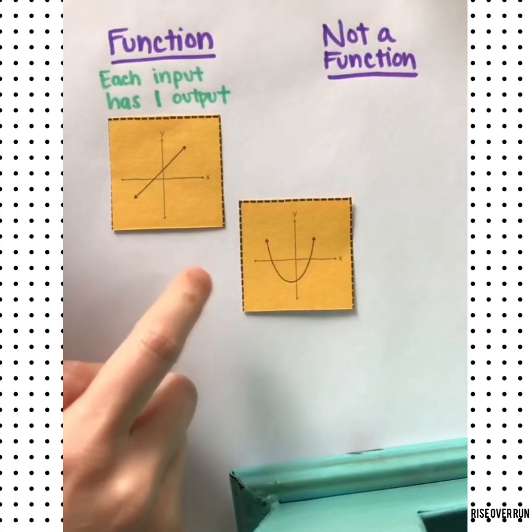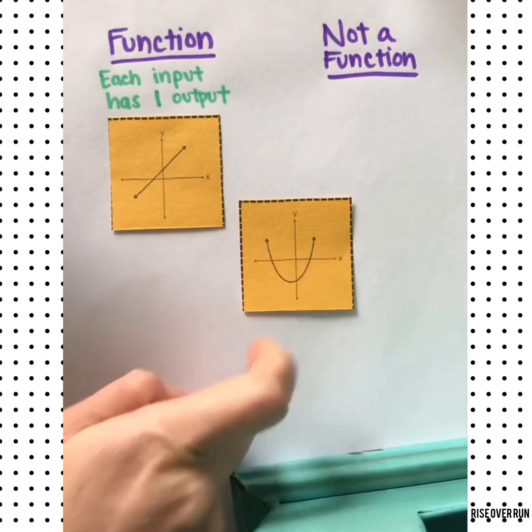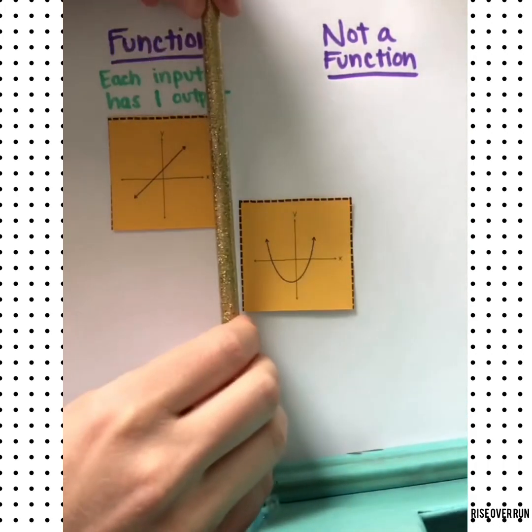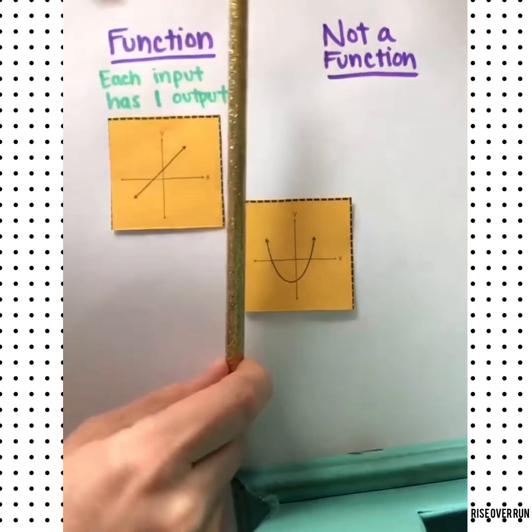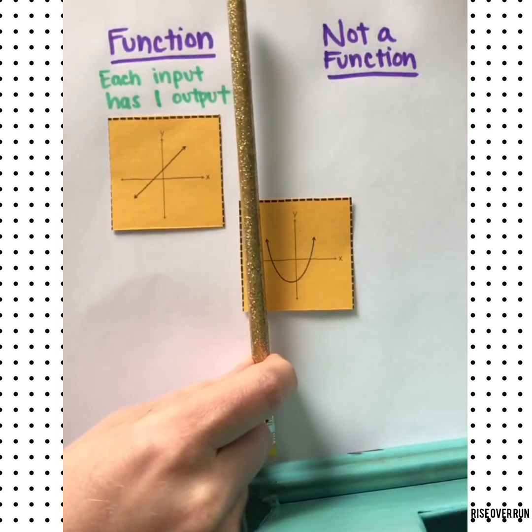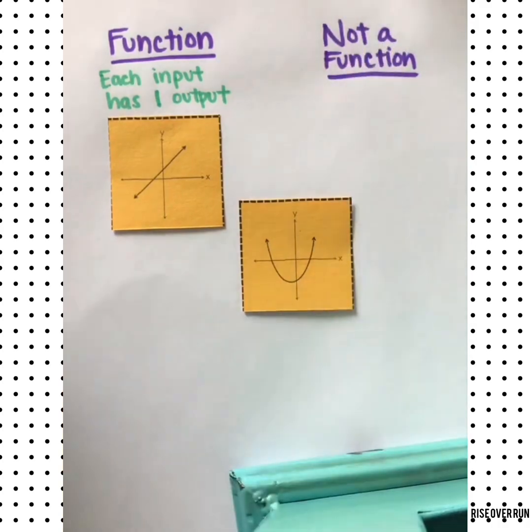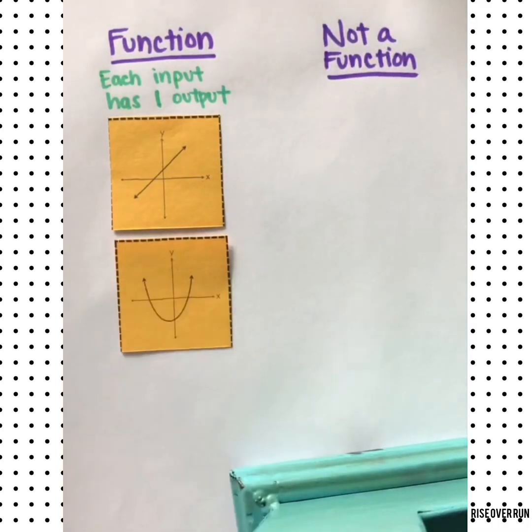Let's try the vertical line test on this parabola. We're trying to see if this pencil hits two points on this curvy line at one time. Nope, it passes the test, so that's a function.